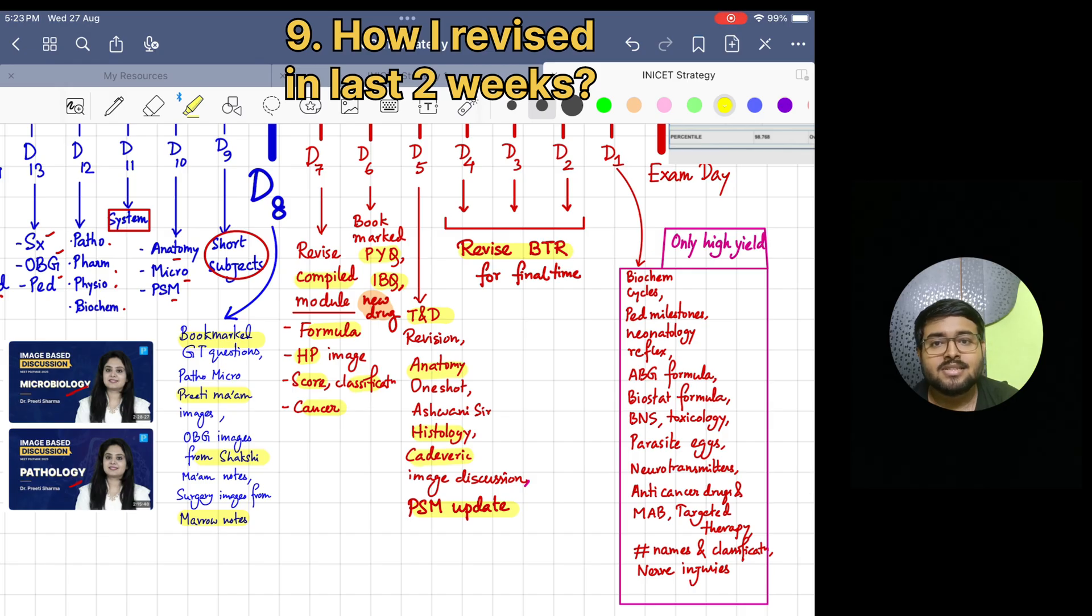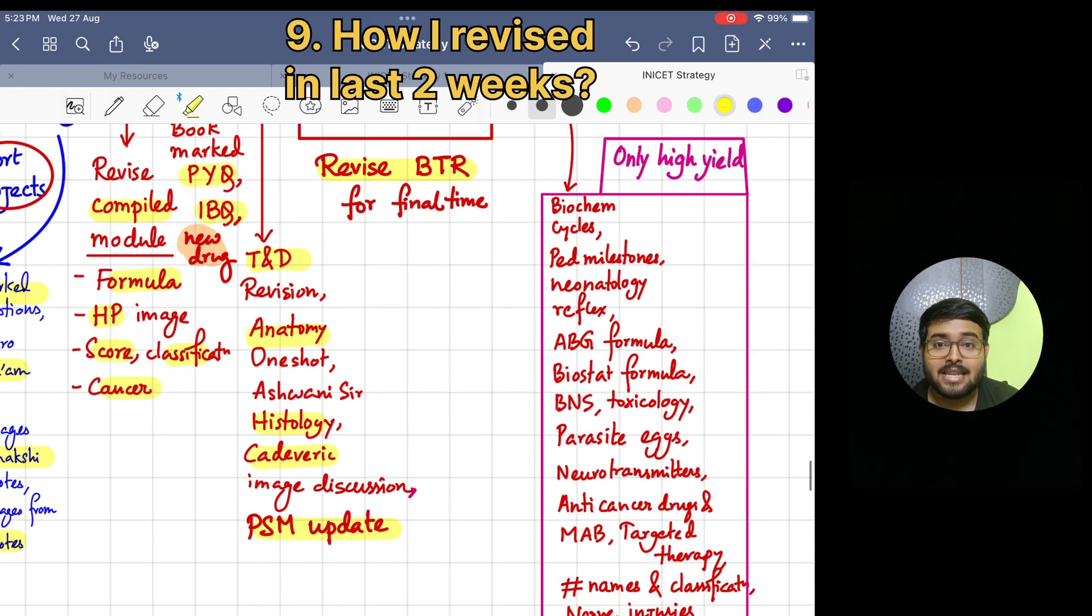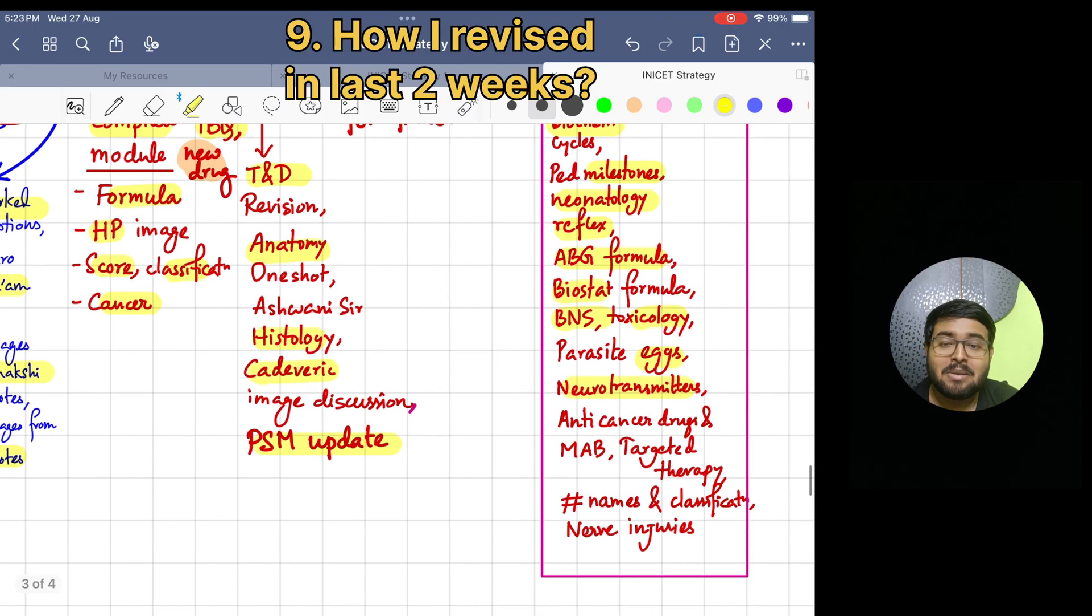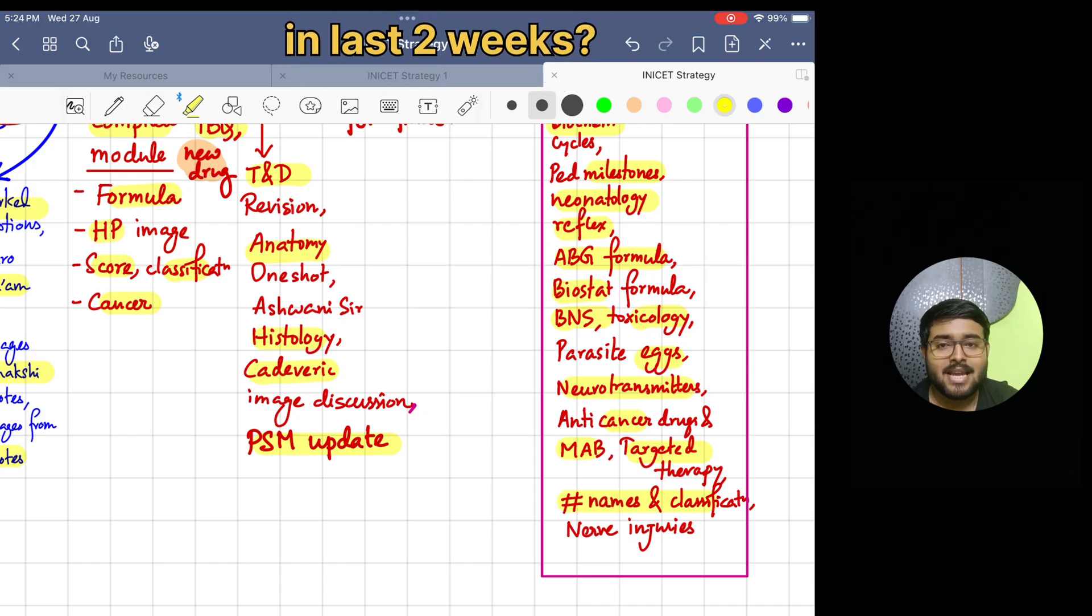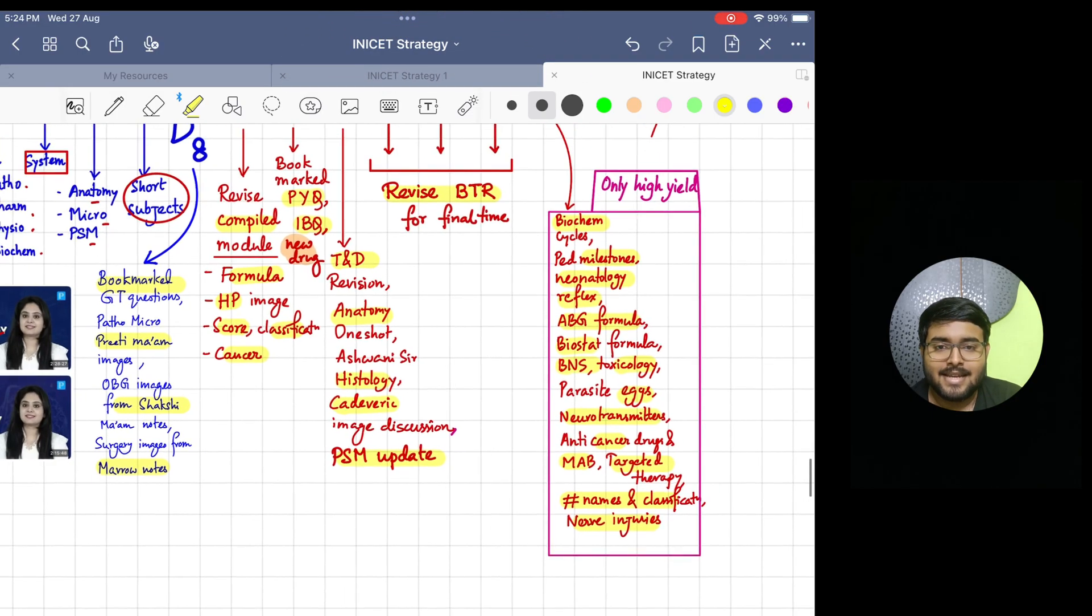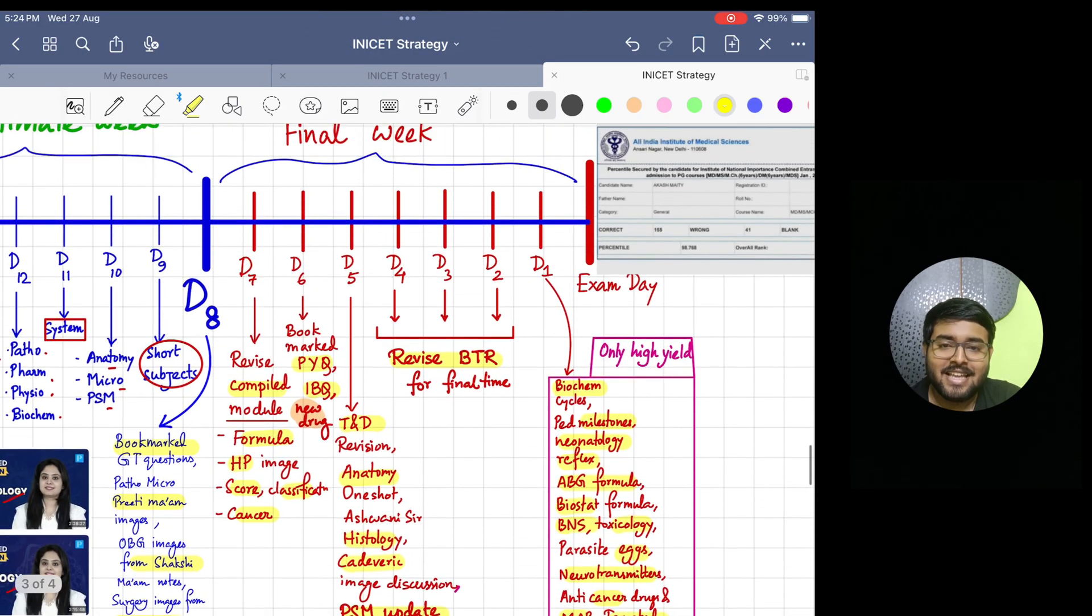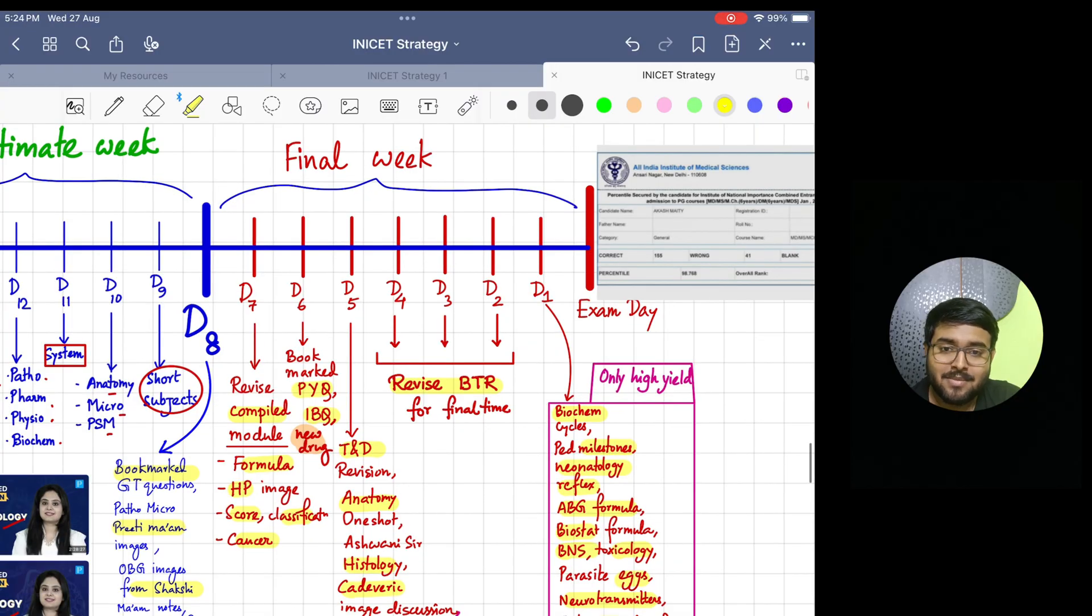In the last day before the exam, I revised most high-yield stuff like biochem cycles, pediatric milestones, neonatology reflexes, ABG formula, biostat formula, BNS, toxicology, parasite eggs, neurotransmitters, anti-cancer drugs, monoclonal antibodies, targeted therapy, fracture names and classifications, and ANS. See my result in the exam - I got 155 correct.